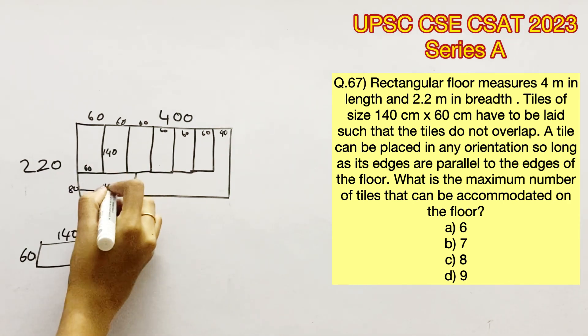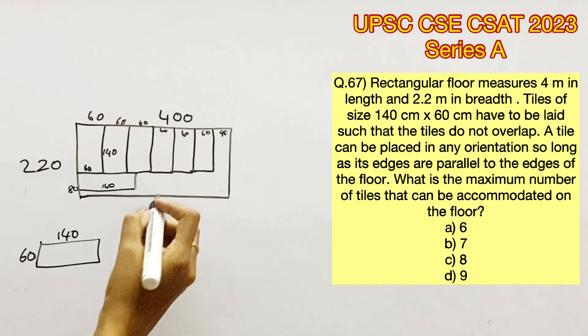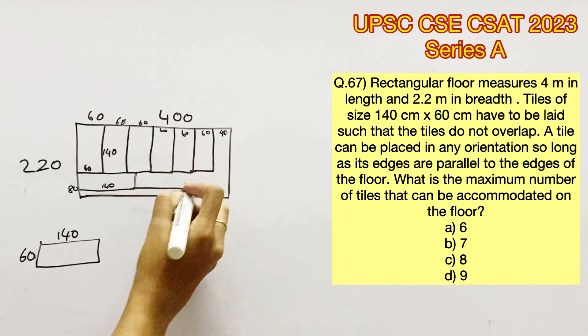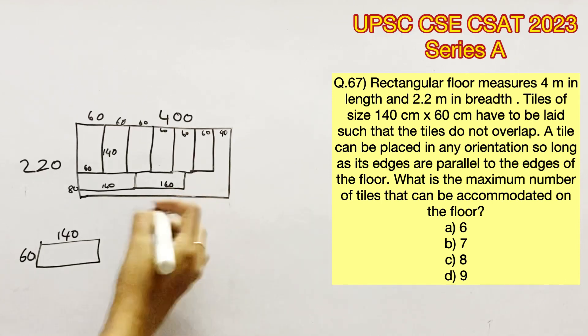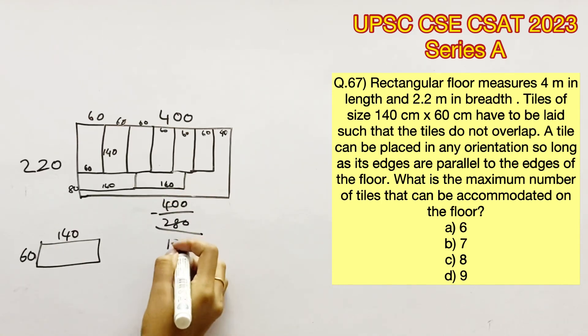Now we can place a tile as such. This will leave us with 20 at the bottom which cannot be filled with a tile. We can place one more tile adjacent to it. We won't be able to place any more because 400 minus 280 will leave us only with 120.